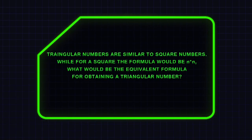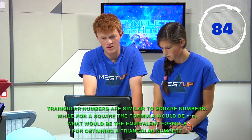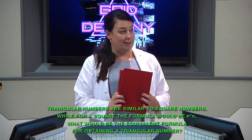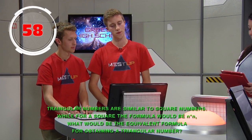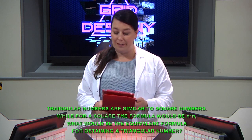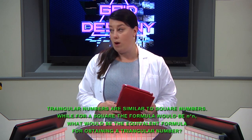Math for 25. Triangular numbers are similar to square numbers — for a square the formula would be n times n. What would the equivalent formula be for obtaining a triangular number? Blue team answers n times n over 2 — incorrect. The other team answers n to the 1 — also incorrect. The correct answer is n times (n minus 1) over 2.